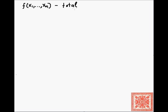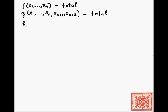In the previous one-argument definition of primitive recursion we dealt with one total function. Here we have two. The second is a total function g of n plus two arguments: x1 through xn, and then the last two arguments xn+1 and xn+2. We take these two functions and obtain h, another total function, from f and g by means of two recurrences. The first recurrence is: h of x1 through xn and zero equals f of x1 through xn.